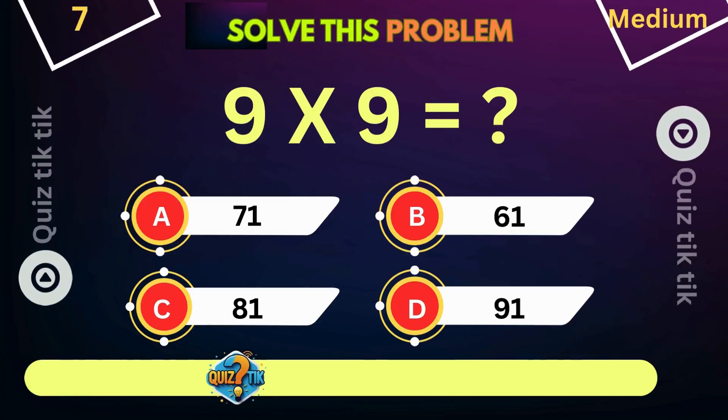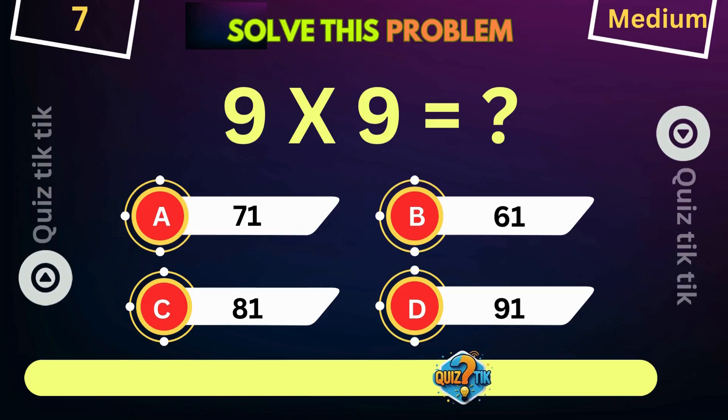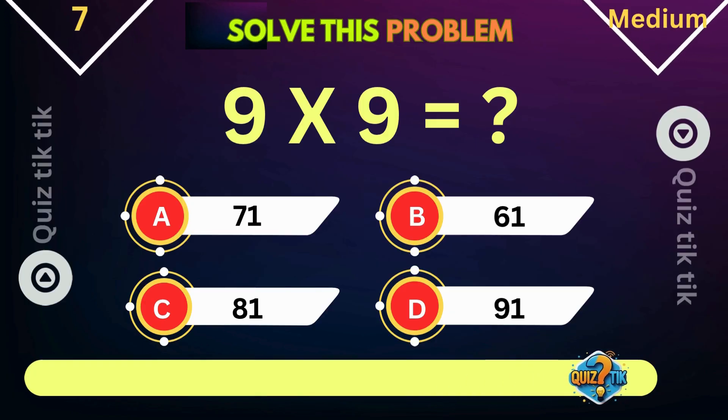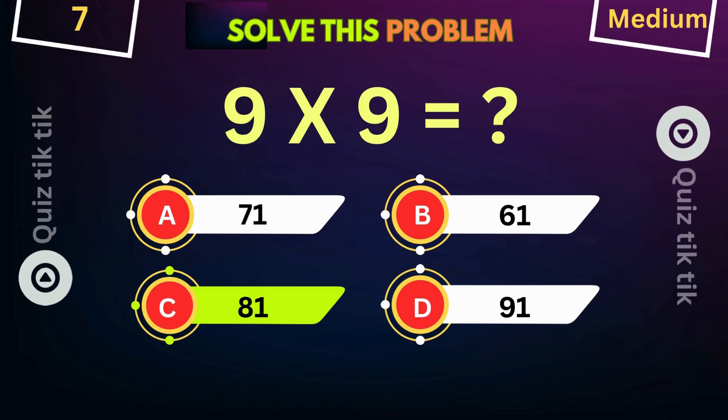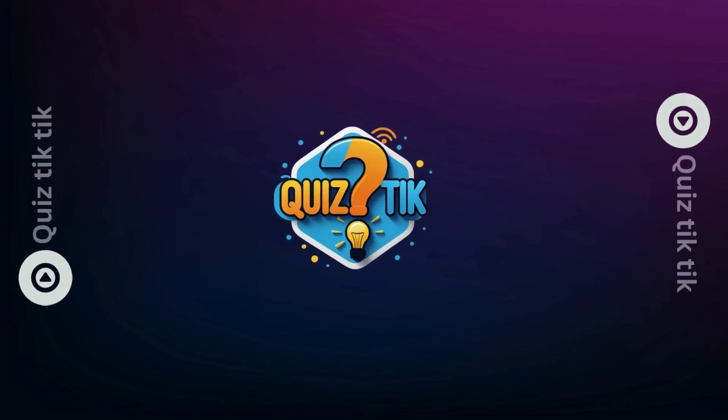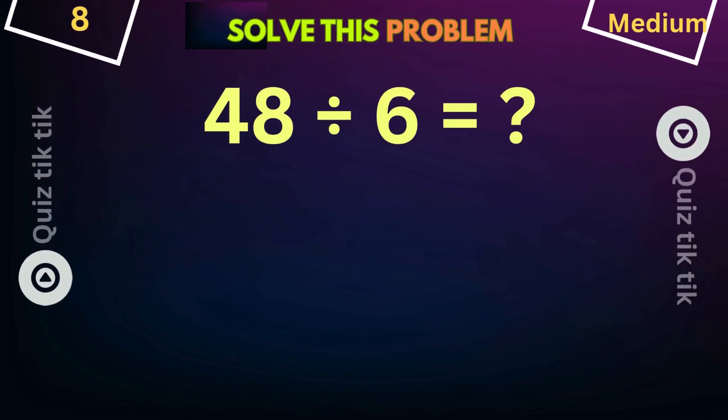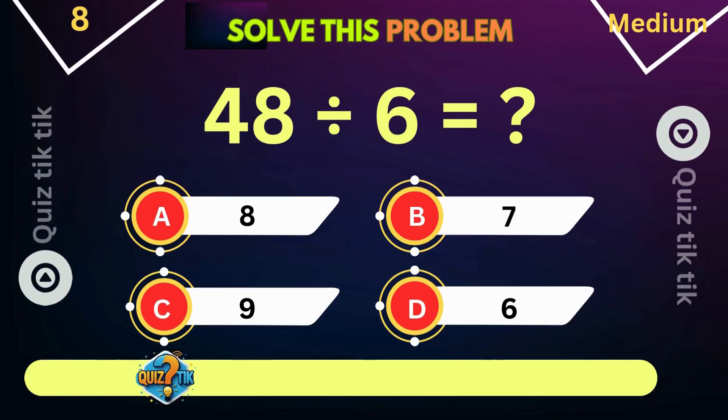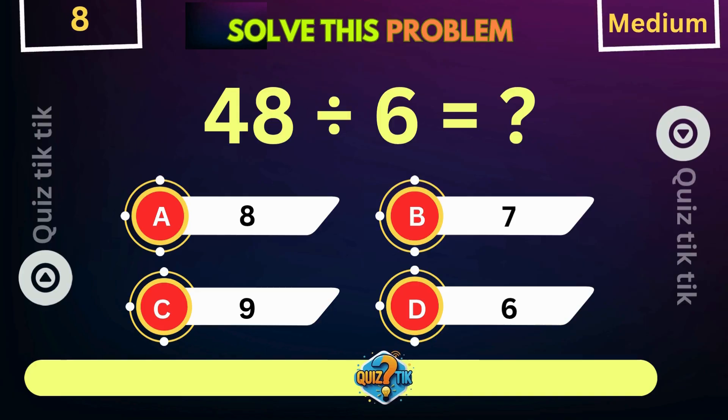9 multiplied by 9 is equal to. 48 divided by 6 is equal to.